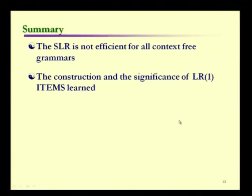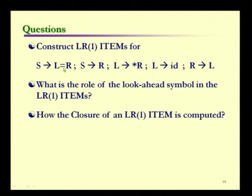To conclude, we have seen how the problem faced in SLR is overcome in CLR by introducing extra information — the lookahead — into the LR(0) item, creating an LR(1) item with exactly one lookahead. This lookahead decides whether to initiate a reduce action or not. The questions to consider are: what is the role of the lookahead symbol in LR(1) items, and how is the closure of an LR(1) item computed? In the next episode, we will construct the canonical LR parsing table.